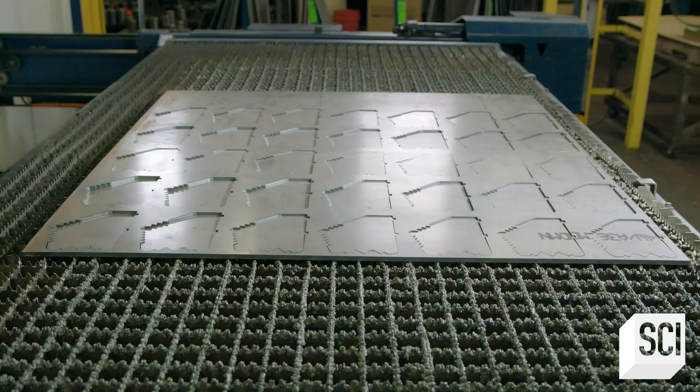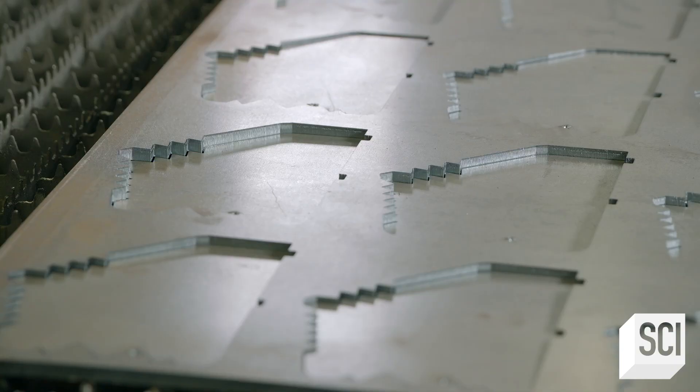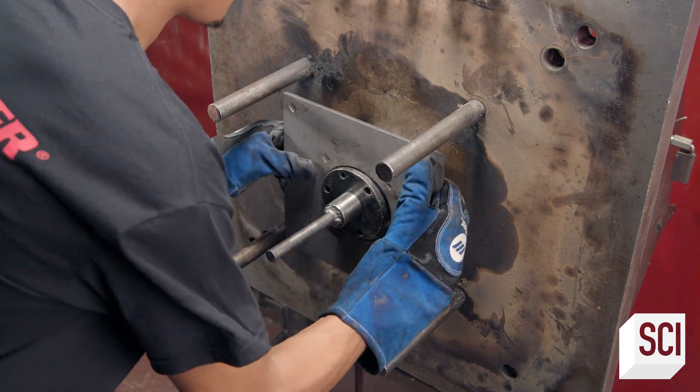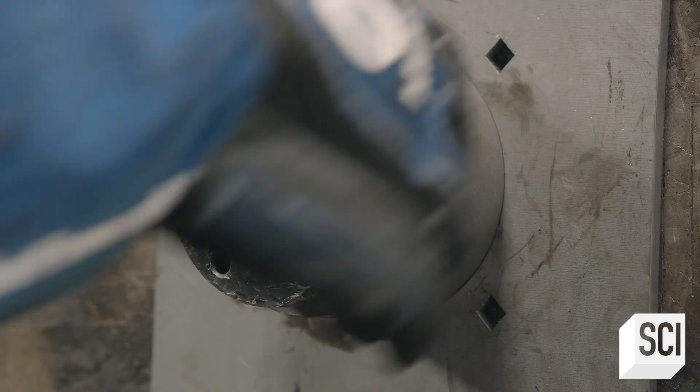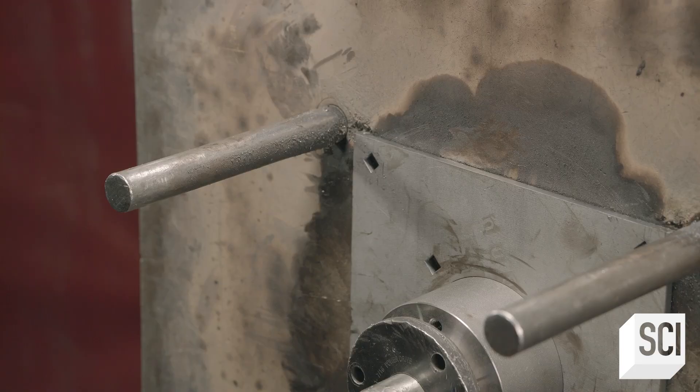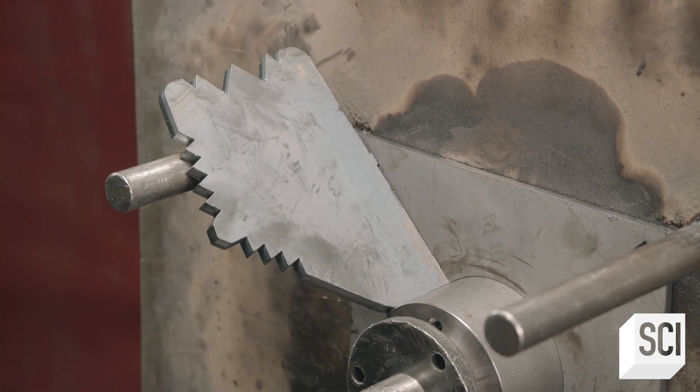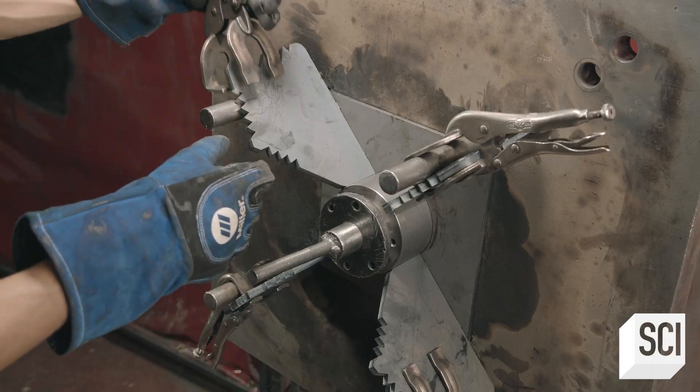Each impeller has four blades with sharp edges that help shred the leaves. The welder mounts the impeller components onto a fixture. Each blade has alignment tabs, which fit into notches on a backing plate.